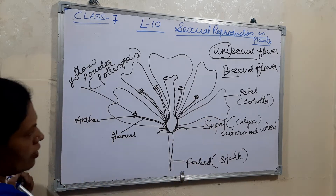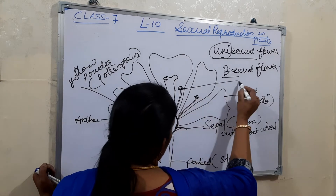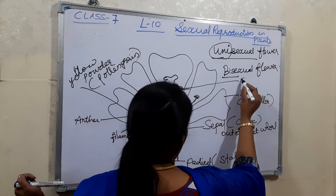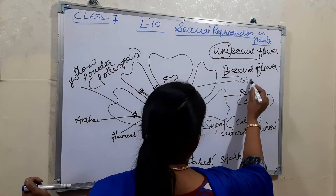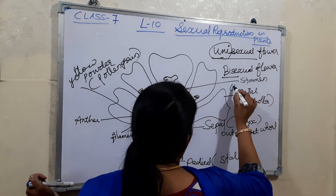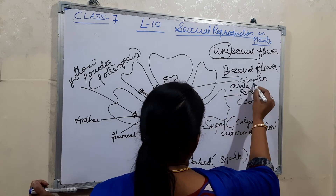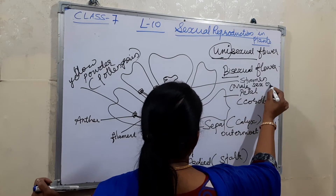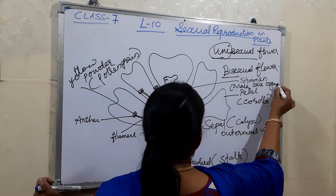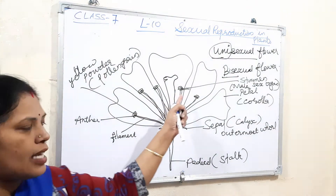This structure — the filament together with the anther — is known as the stamen. The stamen is the male sex organ of the flower.